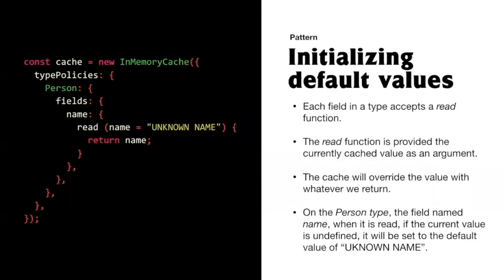Here's an example of a very common pattern — initializing a default value. We have a cache policy, and on any instance of the Person type, on the field 'name,' when this is being read from the cache, if there's no value already, we'd like to set it with the default value of 'unknown name.' Otherwise we'll return it with the value it already has.